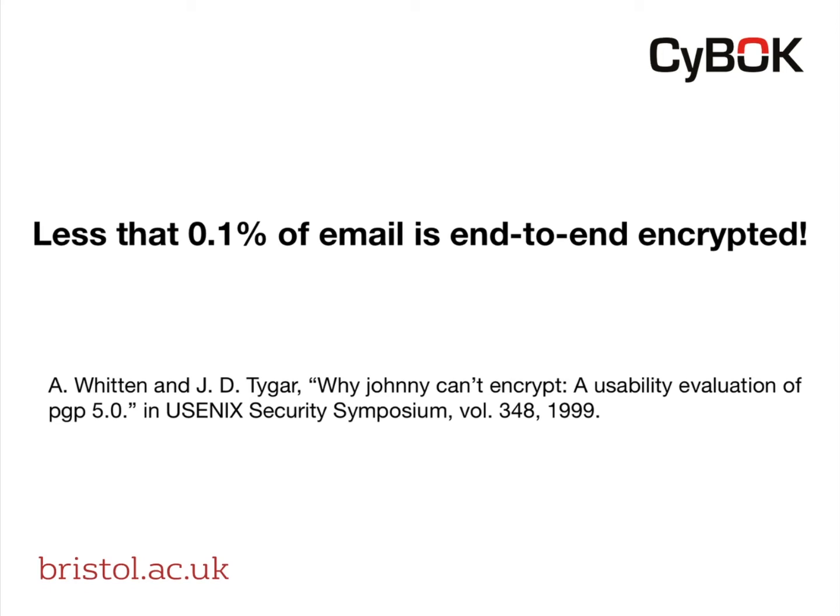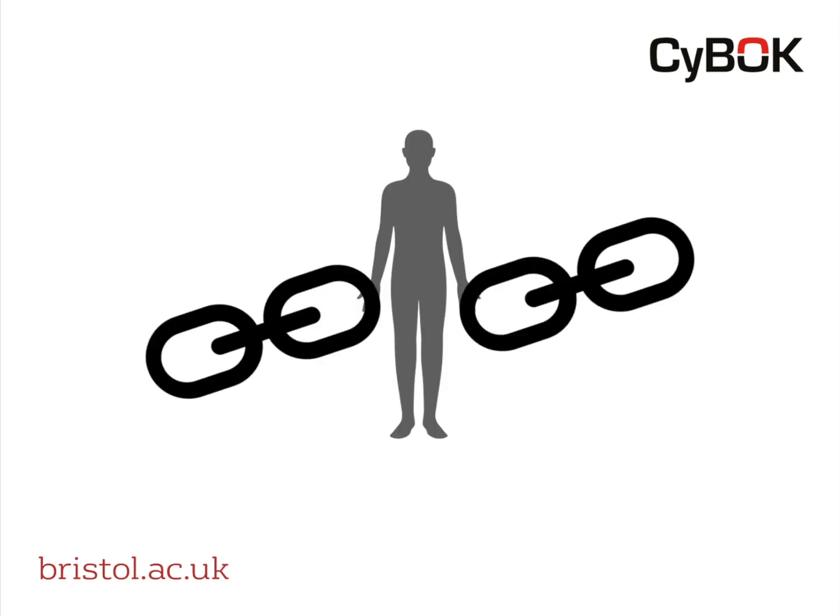Before we dive too far into the human factors knowledge area, one key thing to discuss is the term often used in wider discussion: labeling humans as the weakest link in security. Of course, mistakes and errors are possible, and we are all prone to making mistakes. But this notion of humans being the weakest link tends to shift the blame towards the user, when many times it has nothing to do with the user intentionally or unintentionally behaving insecurely — it is the design of systems that actually leads to those kinds of behaviors.